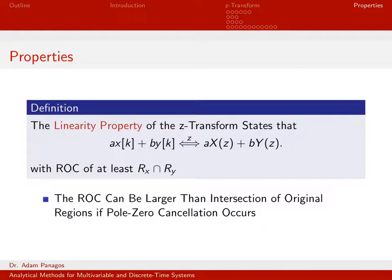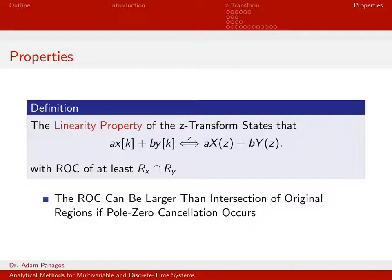The first property is the linearity property. Just like every other transform we talk about in this course, the Z-transform is a linear transform. That means if I take a weighted combination of signals in the time domain, I get a weighted combination of their corresponding Z-transforms. What's interesting for this property is the region of convergence. Given this linear combination in time and its Z-transform in the Z-domain, the region of convergence is the intersection of the original regions of convergence. The intersection means only the points they have in common, so typically you end up with a smaller set of points.